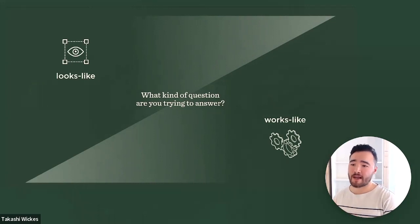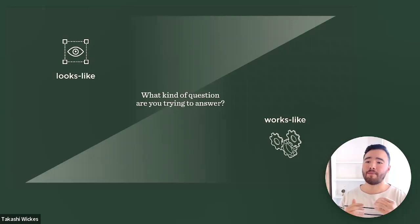This is the difference between a look like prototype and a works like prototype. Within the toy industry, we'll use this very often when we're inventing a new toy, where we'll talk about a look like model, which is more of a model that showcases how a toy might look on the shelf versus a works like model, which is built with 3D printed parts or foam core and might not look that pretty, but it really showcases this is how it might work.